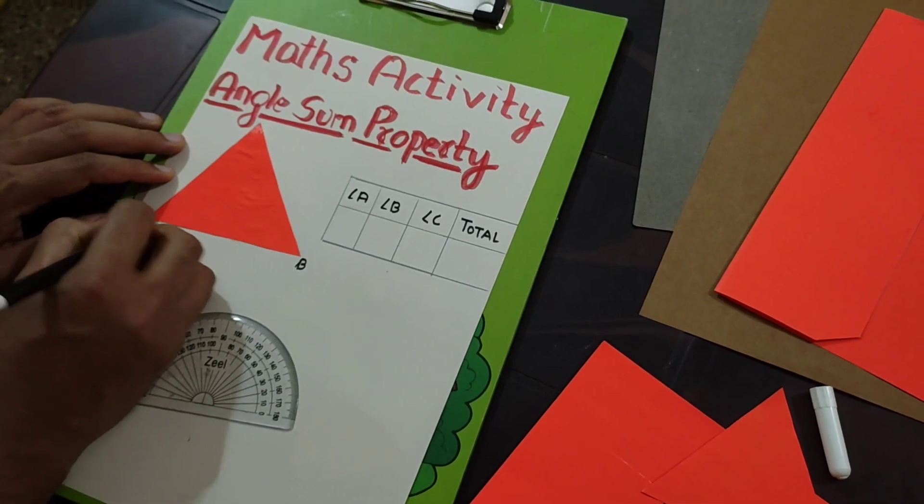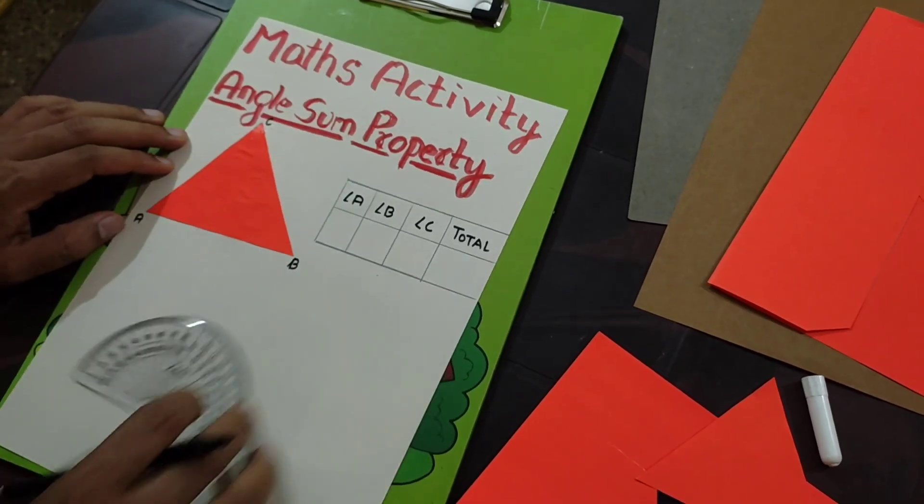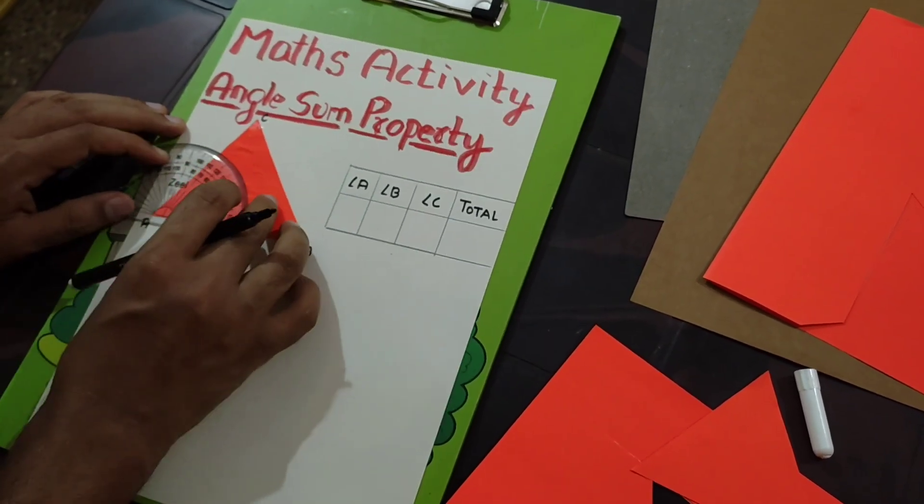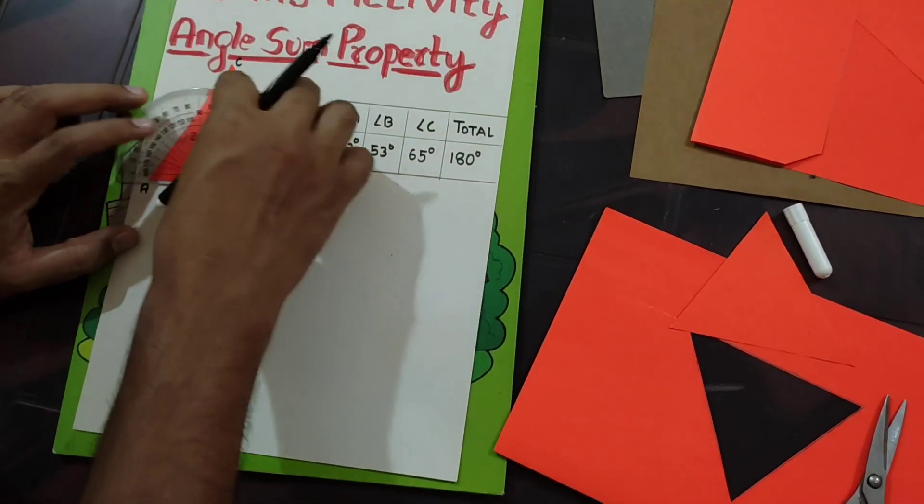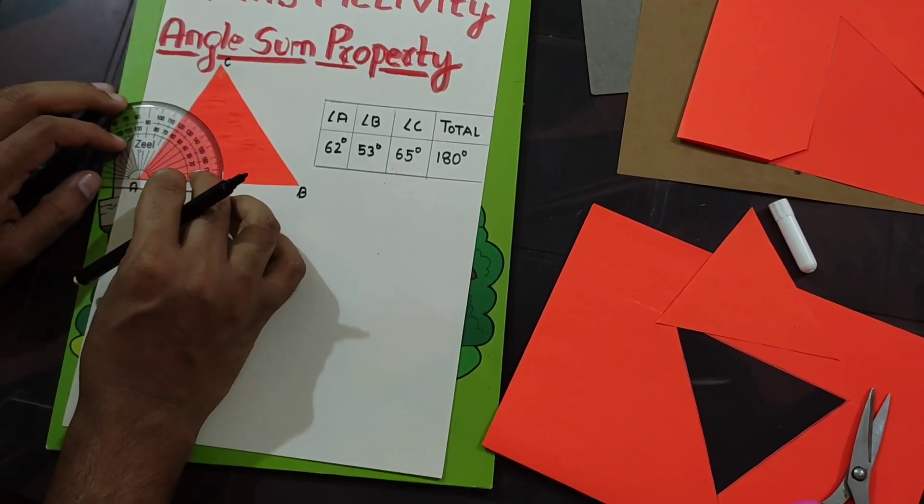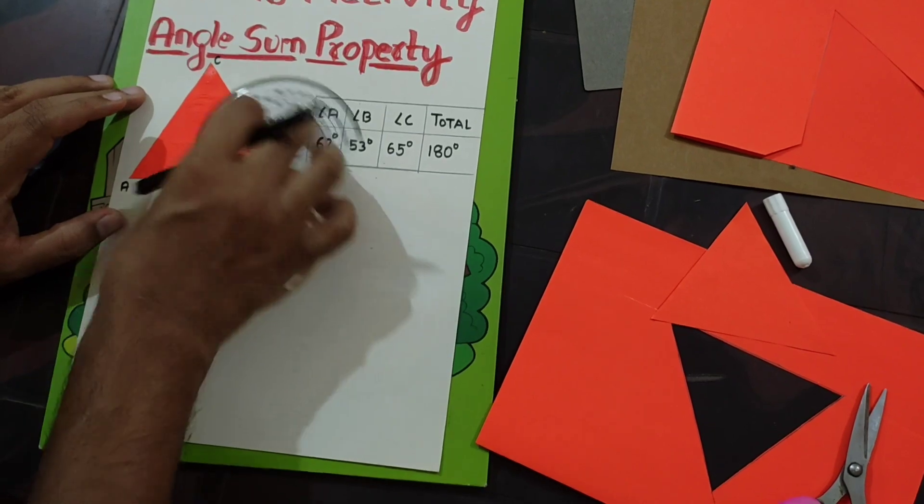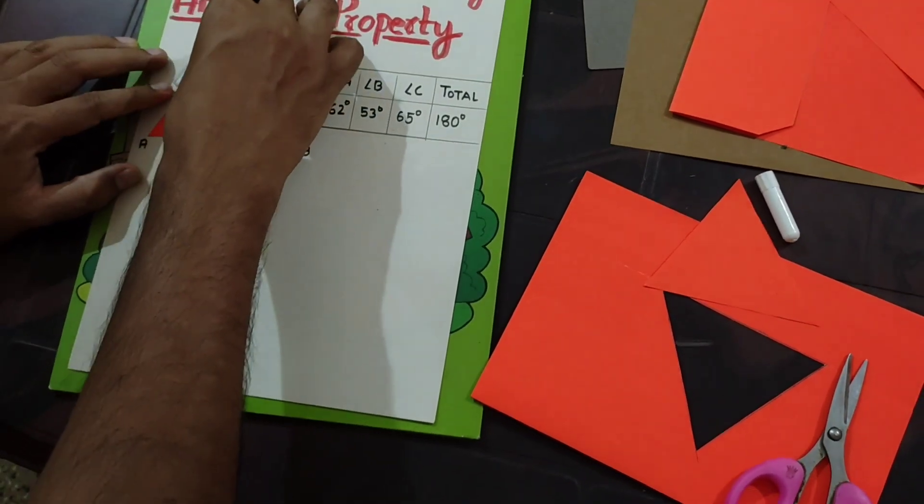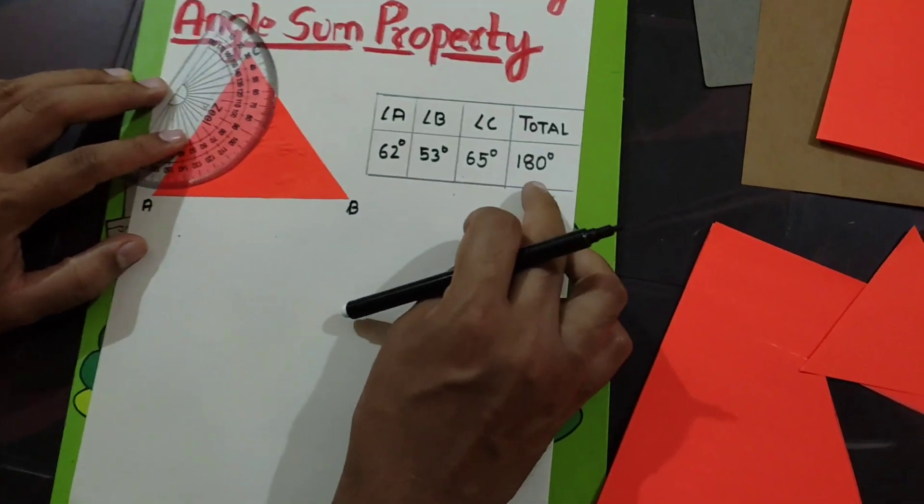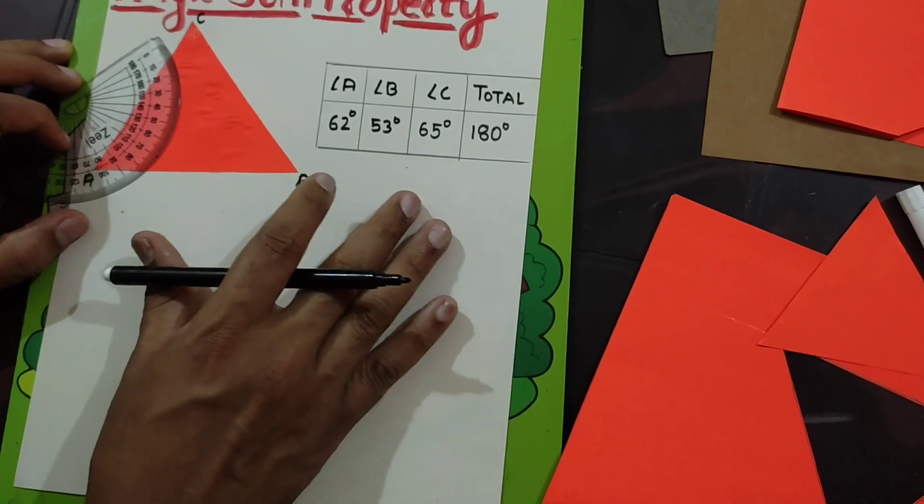Let's name it angle B, angle A, and angle C. If you see here, I have measured all the angles: angle A, angle B, and angle C. When I add all this, it is 180 degrees. This is the mathematical proof that we generally do in school.